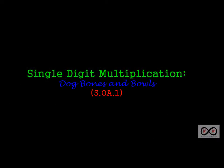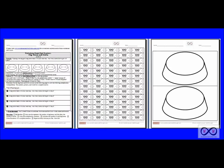Hello and thank you for visiting worksheetsandwalkthroughs.com. In this video walkthrough lesson we're going to take a look at single digit multiplication and more specifically the game of dog bones and bowls. This is standard 30A1.